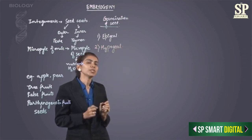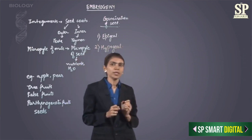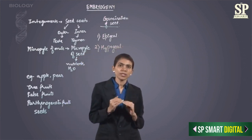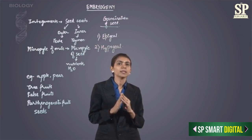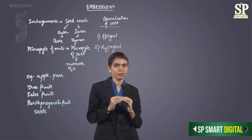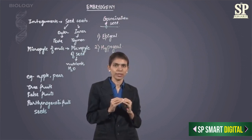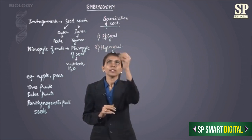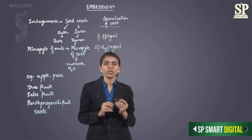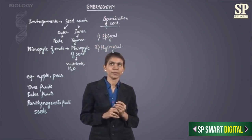The second type is hypogeal germination. In hypogeal germination, the epicotyl grows and the plumule comes above the surface of the soil, but the cotyledons remain below the soil surface. That is called hypogeal germination.